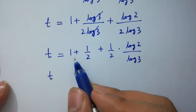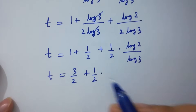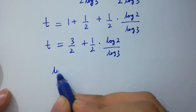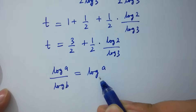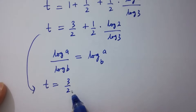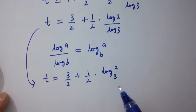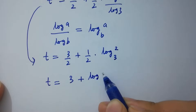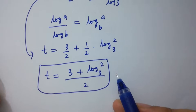t equals 2 over 2 plus 1 over 2, which gives 3 over 2, plus half log 2 over log 3. Using the change of base identity log a to the base b, t equals 3 over 2 plus half log 2 to the base 3, which is the same as t equals (3 plus log 2 to the base 3) over 2 — and this is the value of t.